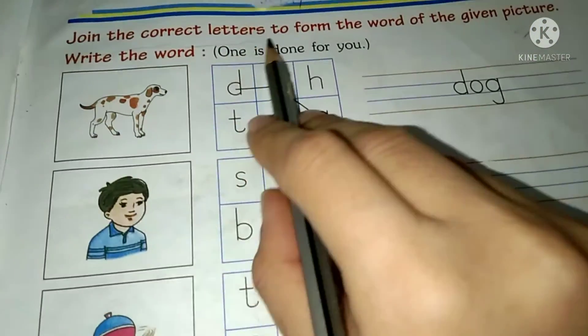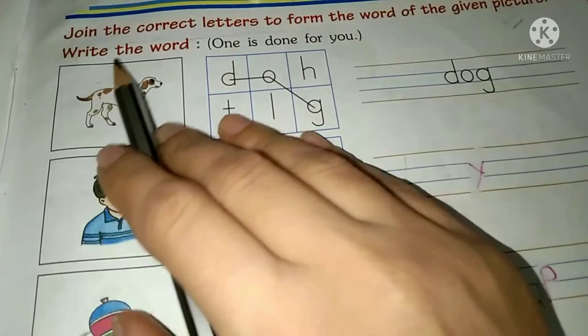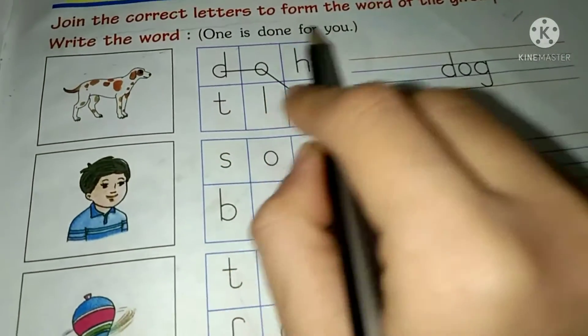You have to join the correct letters to form the word of the given picture. Write the word. One is done for you.